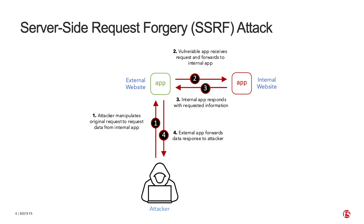Moving on to the second attack, we're going to demonstrate a server-side request forgery attack. This attack exploits a common web application vulnerability that allows an attacker to induce the server-side application to make requests to an arbitrary domain of the attacker's choosing, either internal or external. In doing so, attackers can force servers to create connections with internal-only services to obtain sensitive data, or conversely, force the server to connect with external systems to leak that data.